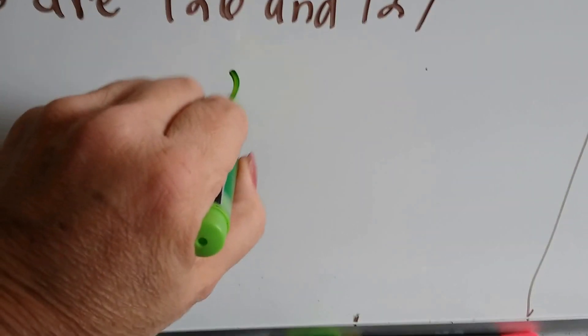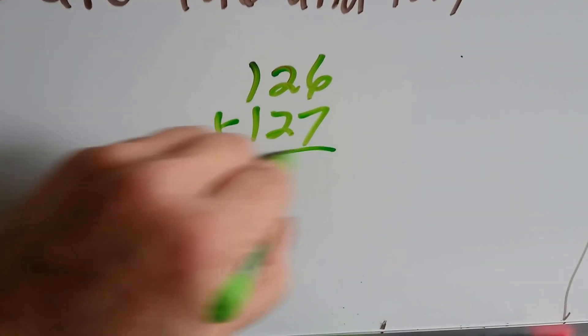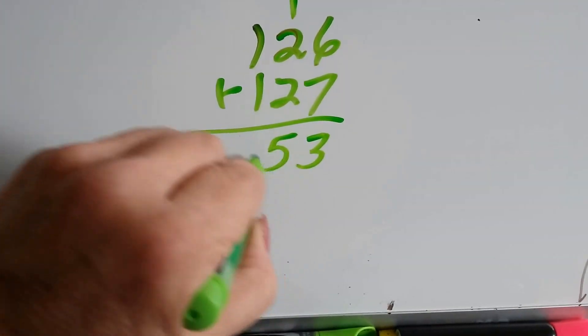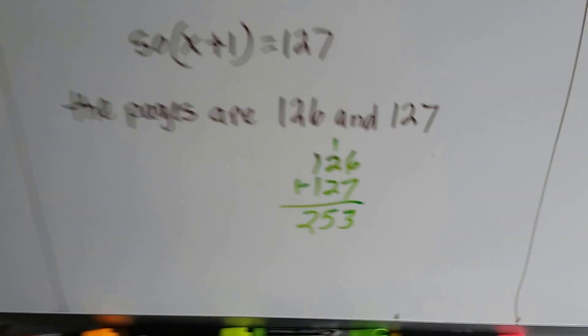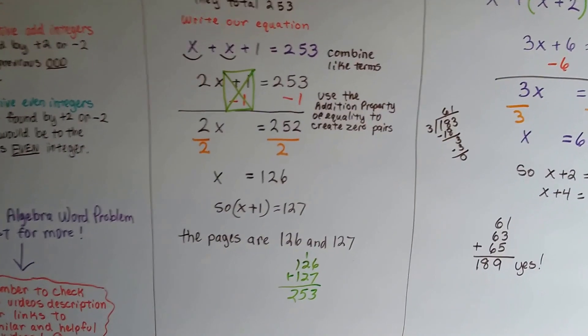And we can check it. We can add 126 and 127 and see if they equal the 253. And look, they do. It equals the 253. So we know we did it correctly.